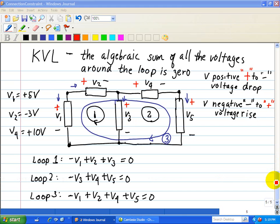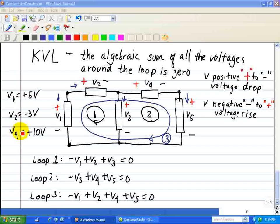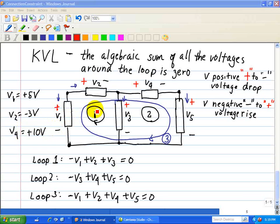Okay, now we assign some values of V1, V2, and V4 respectfully. So, here, for V1, we're assigning a plus 5 volts, for V2, we're assigning a minus 3 volts, and for V4, we're assigning a plus 10 volts. And we're asked to find V3 and V5.